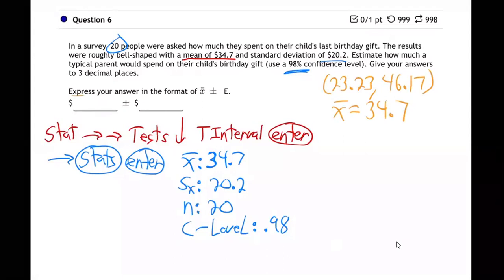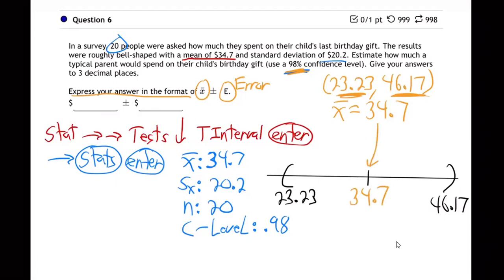So notice what they want from us on this question. They want us to express our answer in the format average plus or minus error. That's the other way to say a confidence interval. You can say we're 98% confident it's between 23.3 and 46.17. Let me draw a number line. That might be helpful for you all to see because that's what we're really talking about here. So picture a number line.